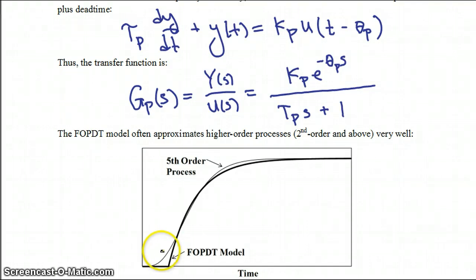So you get some deviation here and a little bit here between this first order plus dead time model and a fifth order process, which is shown in the light curve.